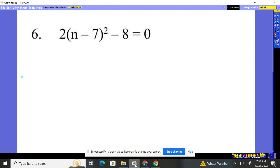Number six, two times this bit squared minus eight equals zero. Let's solve this by moving the eight over to start. Add eight, add eight.